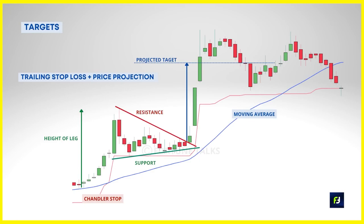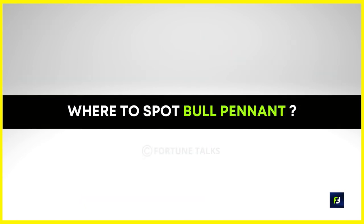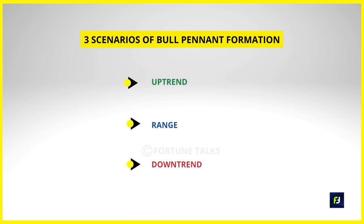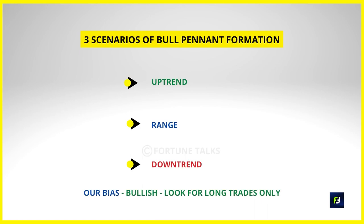Bull pennants can be found almost anywhere — in uptrends, range markets, or downtrends. The only thing to remember is that whenever a bull pennant forms, it is a bullish continuation pattern and traders should always look for long trades only. The scenarios are: in an uptrend, in a range market, and in a downtrend as a reversal signal.